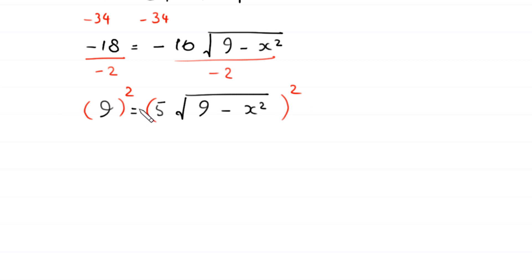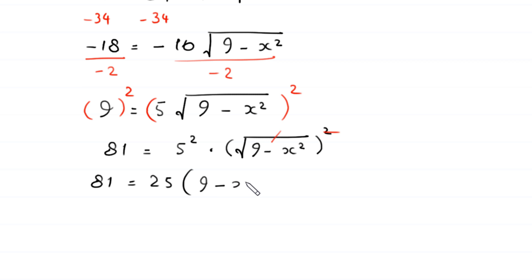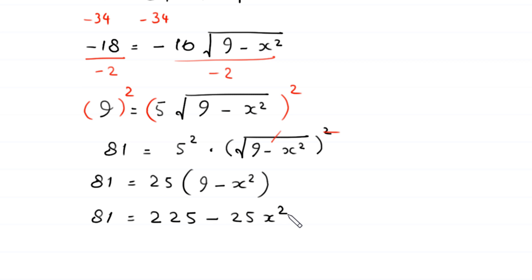So 9 squared equals 81, and on the right hand side we get 5 squared times the square root of (9 minus x squared) whole squared. So 81 equals 25 times (9 minus x squared), since the square cancels the square root.